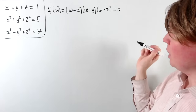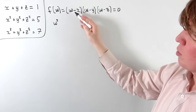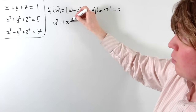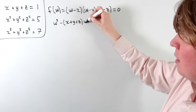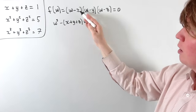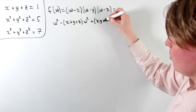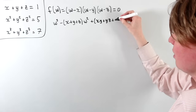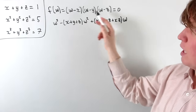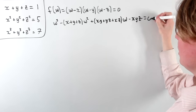If we expand the brackets, we get w³, then for the w² terms we collect −x, −y, and −z, giving a factor of −(x + y + z) times w². For the w term, we get the positive product pairs: (xy + yz + xz) times w. And the constant term is just −xyz. So the expanded cubic is w³ − (x+y+z)w² + (xy+yz+xz)w − xyz = 0.